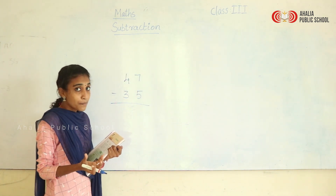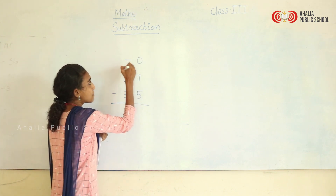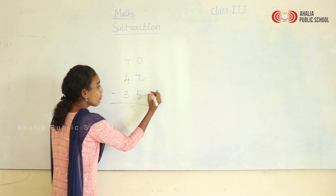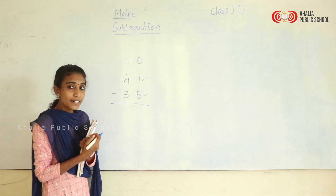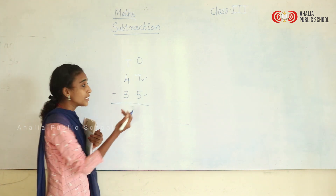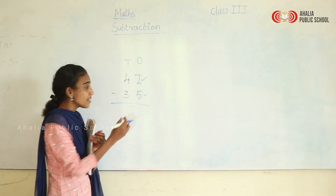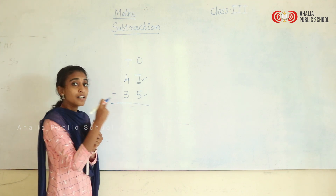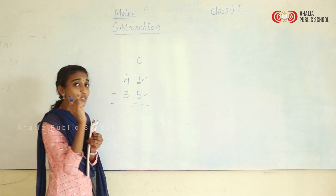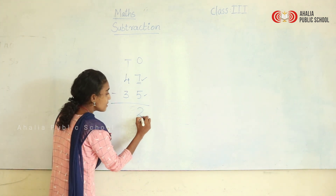So how will you start to subtract? We will start from the ones place as usual. So 7 minus 5 — how will you do 7 minus 5? Keep the second number in mind and count till this number comes. That is 5 in mind: 6, 7. So the answer is 2.